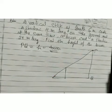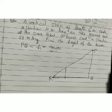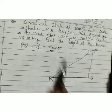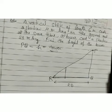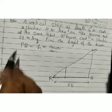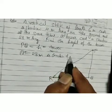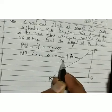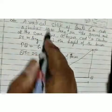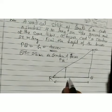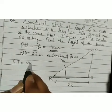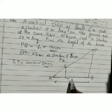PQ is our tower (height H), QR = 28 m is the shadow of tower PQ. ST is the vertical stick of length 6 m, and TR = 4 m is the shadow of the stick.